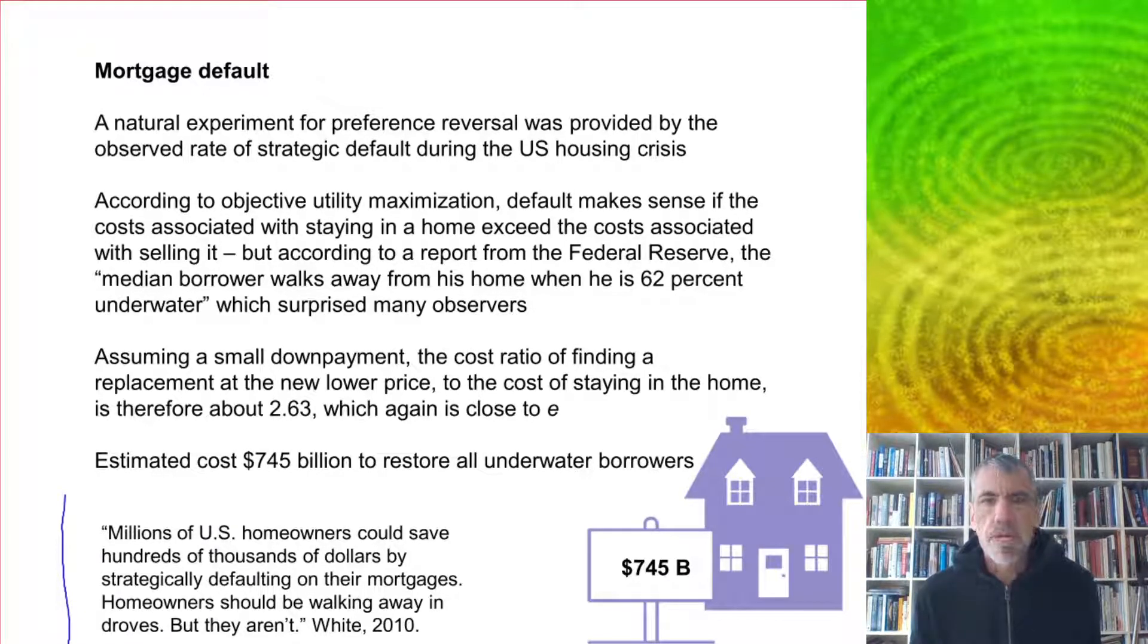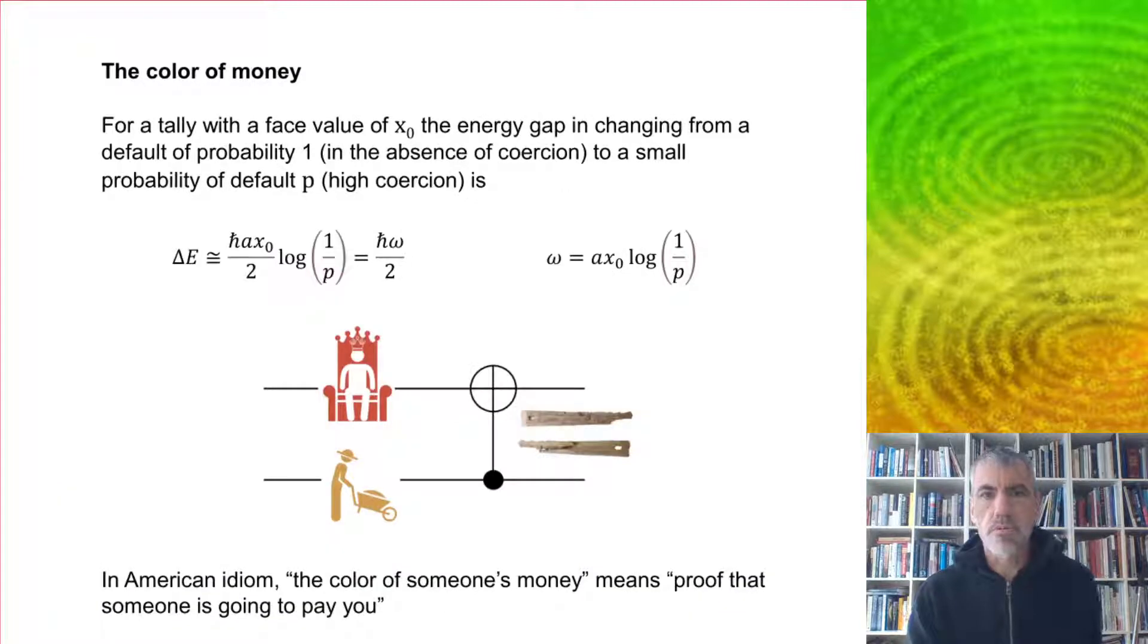Assuming a small down payment, the cost ratio of finding a replacement at the new lower price to the cost of staying at home is about 2.63, which again is close to E. People did not strategically default nearly as much as they should have according to classical theory. This turned out to be very important because it would have cost an estimated $745 billion to restore all underwater borrowers.